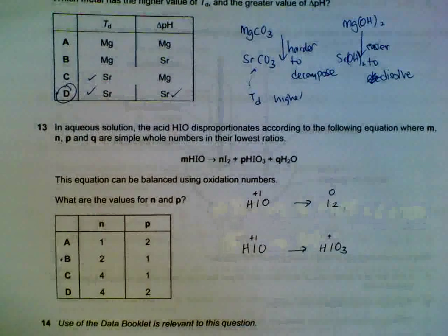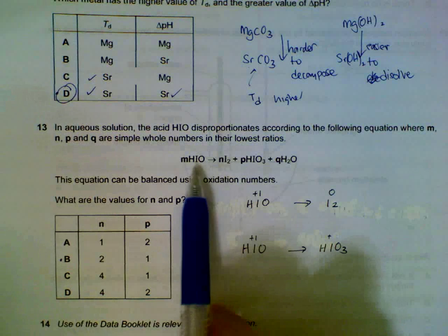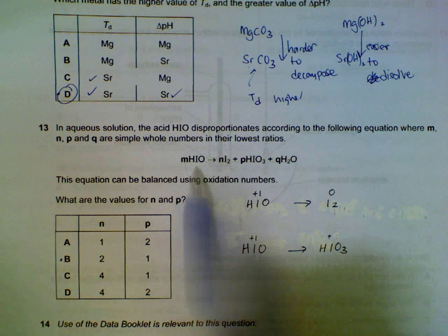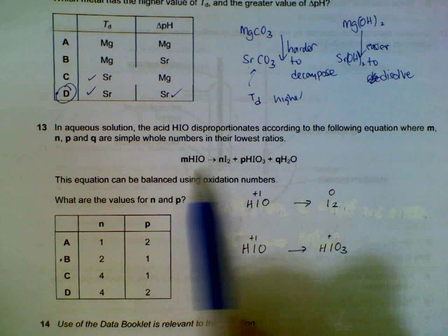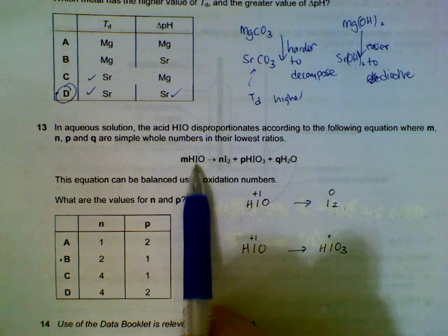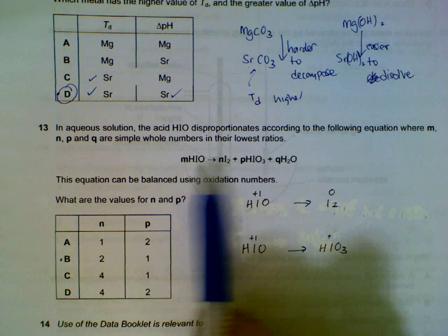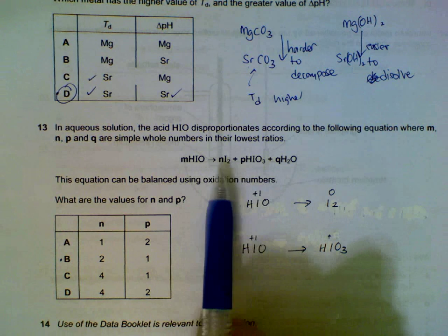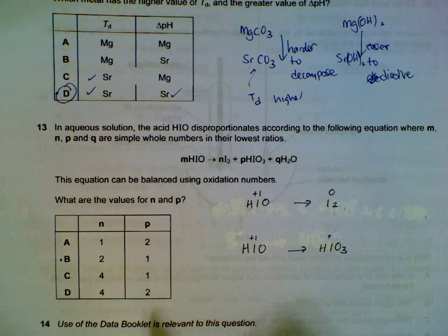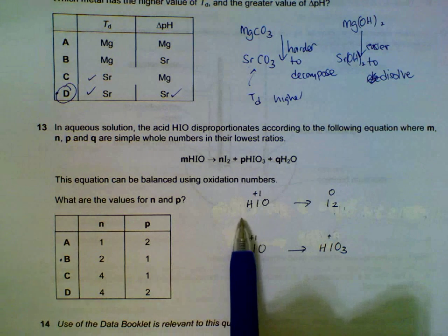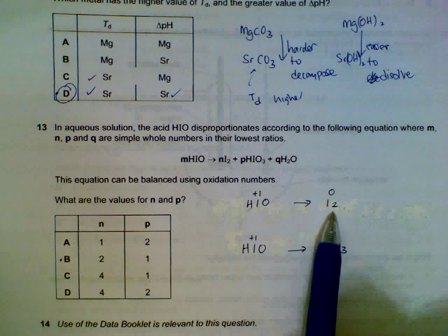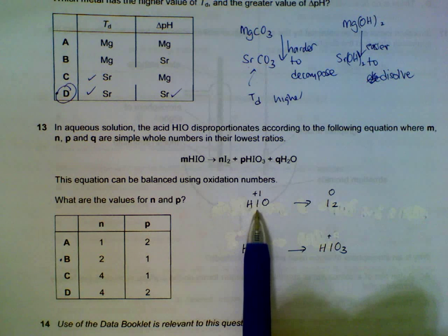13, we have the disproportionation. That means something is oxidized and reduced at the same time. We focus on the iodine. The iodine is the one that is oxidized and reduced. The hydrogen and oxygen, neither oxidized nor reduced. So we've tried to form two half equations. HIO becoming I2.